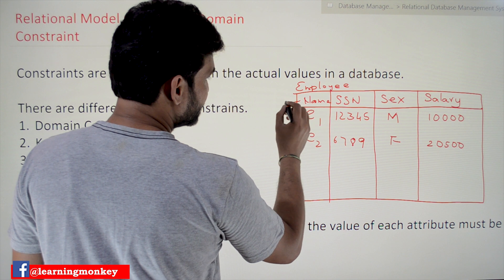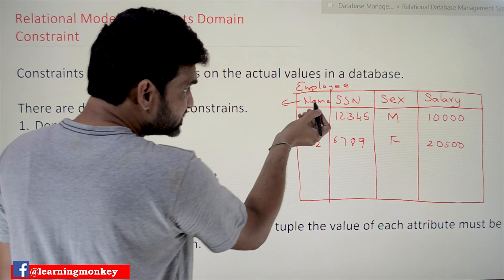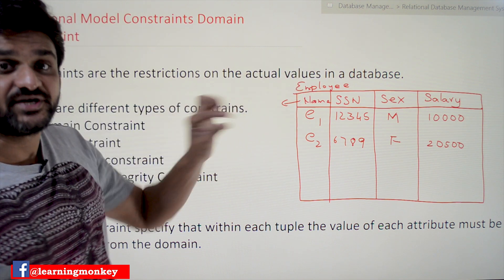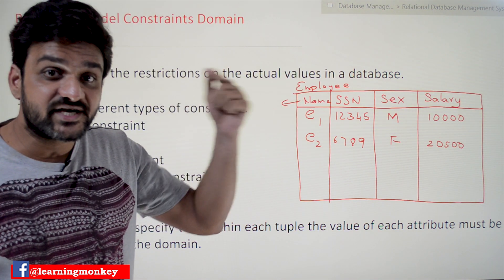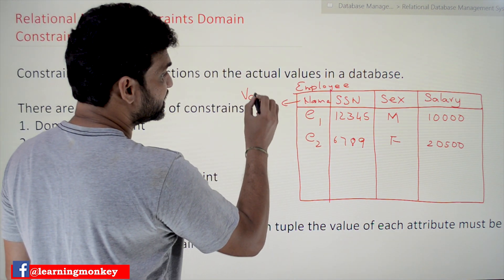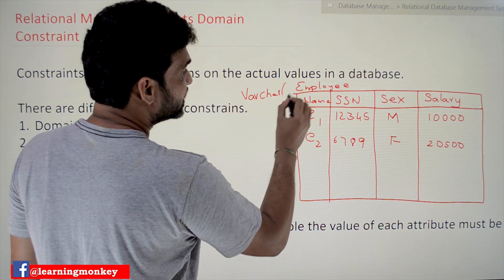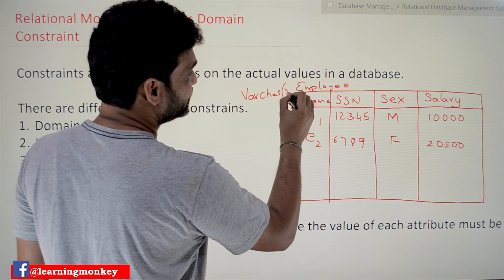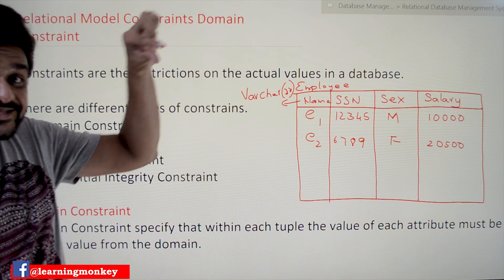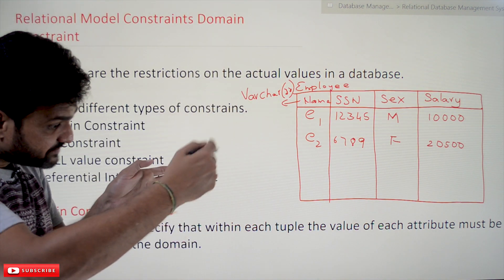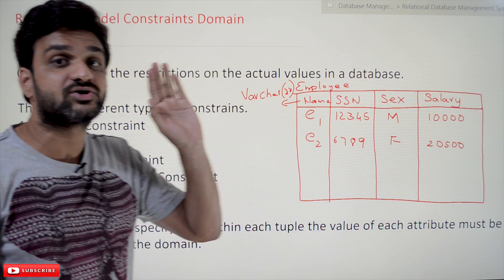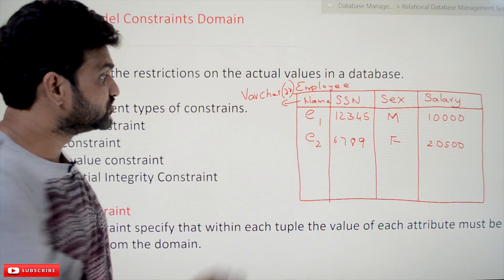For example, take the 'name' attribute — what kind of values can be inserted for name? It is going to be a character string, and the SQL data type for that is VARCHAR, variable-length character string. We give it a size like 30 or 40. That size is also a domain constraint — it states the number of characters for that value should not exceed 30.